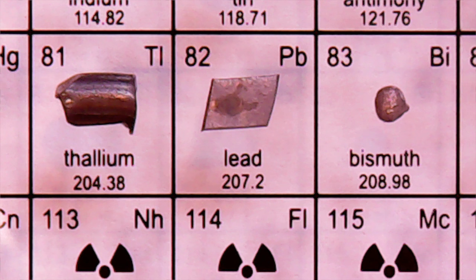And then bismuth — this is an interesting one. Its salts are used for two interesting applications. One of them is it's used for pigments, colourings. And also you might have heard of Pepto-Bismol, which contains bismuth — that's used as a treatment for diarrhoea.